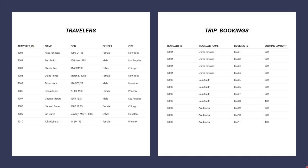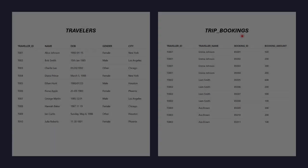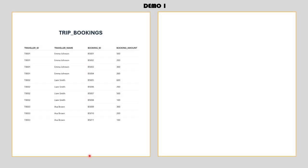Let's say you're working for a logistics company and for a particular requirement, you're dealing with two source tables. The first one is travelers, which contains customer details, and the second is a trip bookings table that records the bookings those customers have made. For this first demo, I'll be using the trip bookings table. To keep things simple, I've included just three travelers in their bookings.